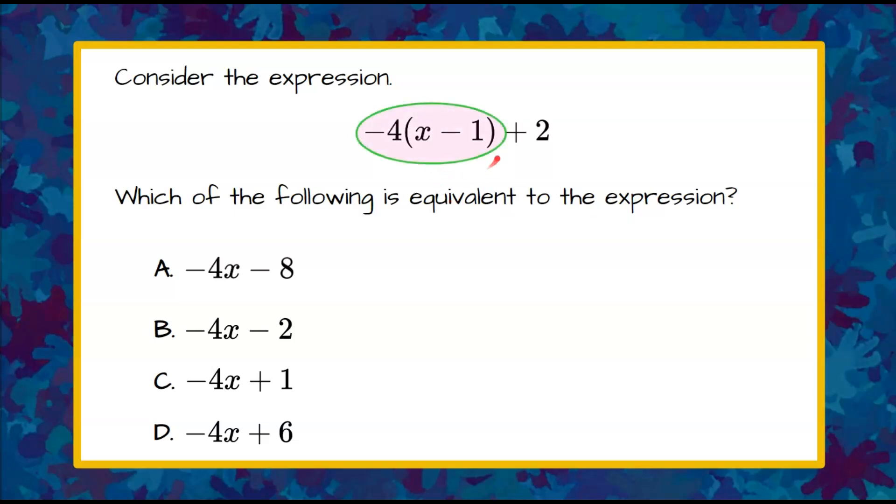So we are going to first look at this expression with the parentheses. We need to clear the parentheses before we can start combining like terms. So we know that we have negative 4 as a factor that needs to be multiplied to the x and then multiplied to the value negative 1.